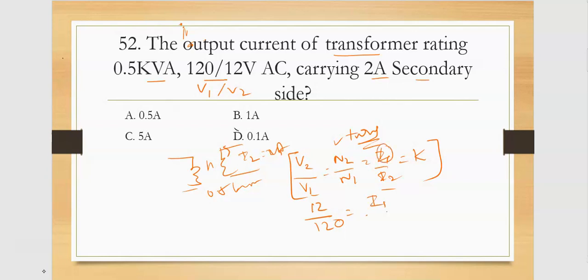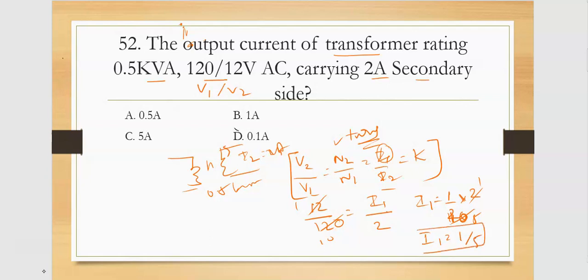V2 is 12 and V1 is 120. We need to find the primary side current. Secondary side current I2 is 2 amps. So primary current I1 = (V2/V1) × I2 = (12/120) × 2 = (1/10) × 2 = 1/5 = 0.2 amps.